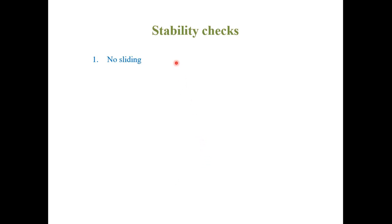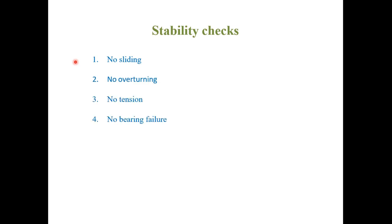Stability Checks: Before designing, we check four stability criteria — no sliding, no overturning, no tension, and no bearing failure.